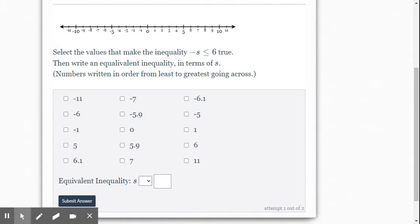But when we do that, remember the sign flips when you multiply or divide both sides by a negative number. So what we're going to do here, Delta Math wants us to rewrite the inequality, so it's going to become s is now greater than or equal to.